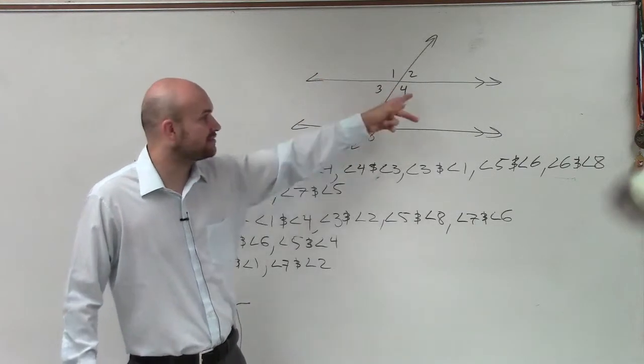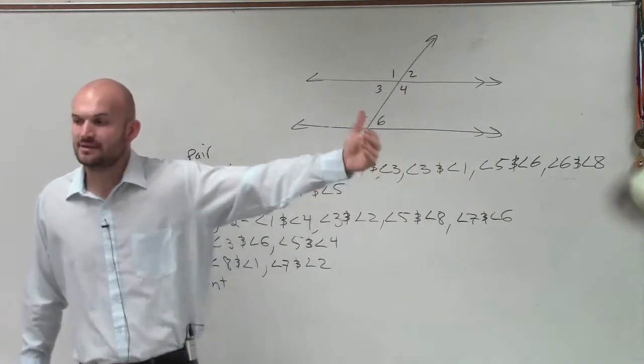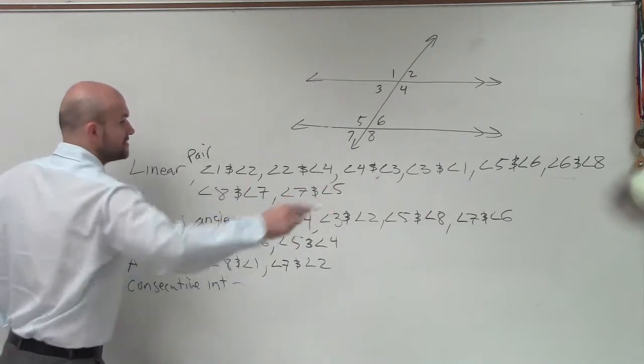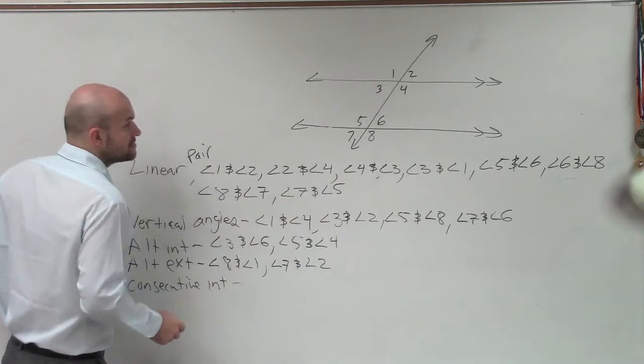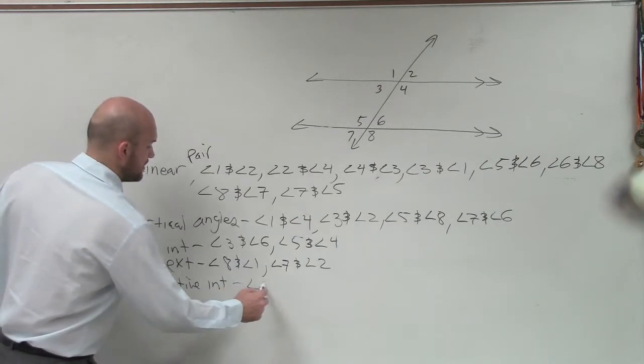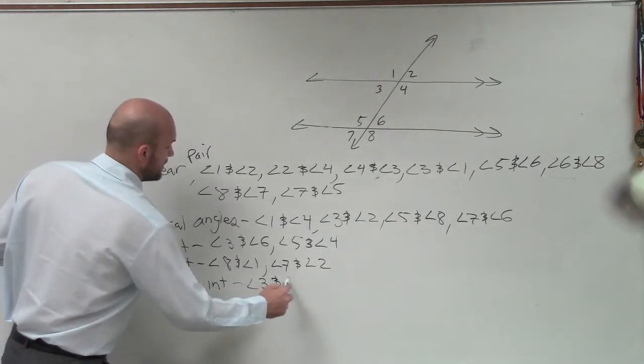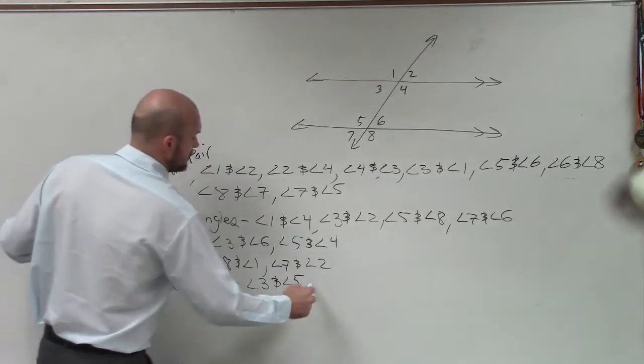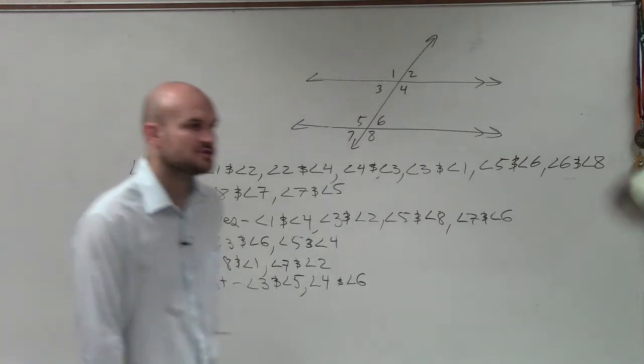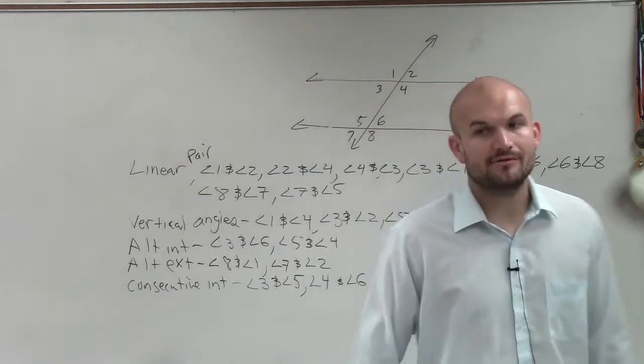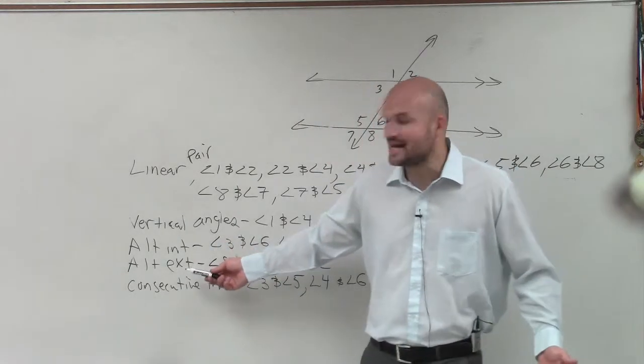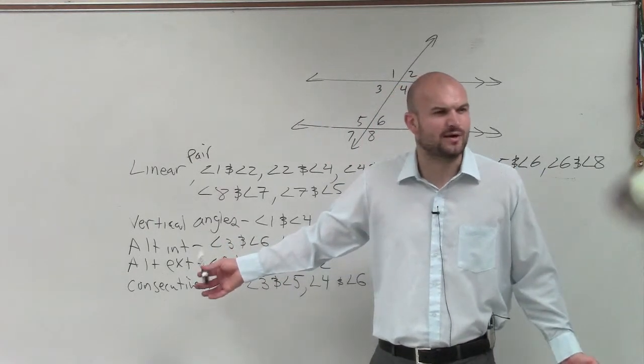So consecutive interior means they have to be interior, and they have to be right next to each other. Now, we know it's not going to be 5 and 6 and 3 and 4, because those are going to be a linear pair. So if you'd just flip that over, please, and then write this one down. Just hold on to it. I'll get it in a second. So therefore, you can say consecutive interior angles would be angle 3 and angle 5, and then angle 4 and angle 6. Those are consecutive interior. And remember, I forgot to actually go over this. Remember, alternate interior and alternate exterior are equal to each other or add up to 180.